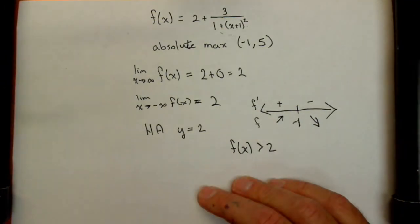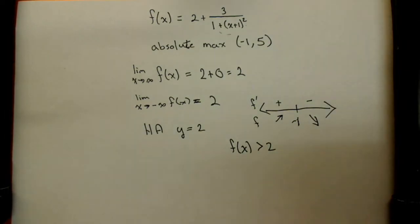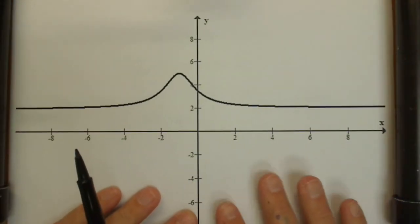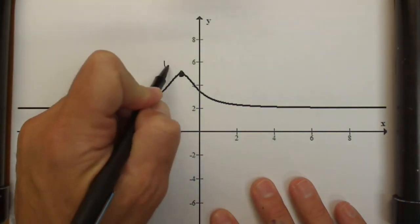So if we take a look at the graph, we'll see that we can actually confirm our findings. Notice here at -1 we got an absolute max at the point (-1, 5).